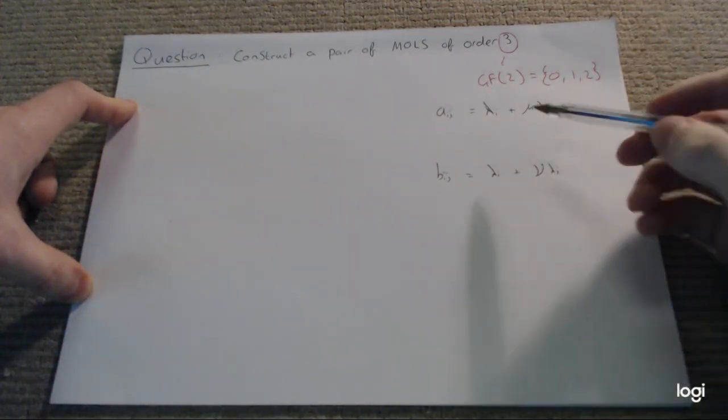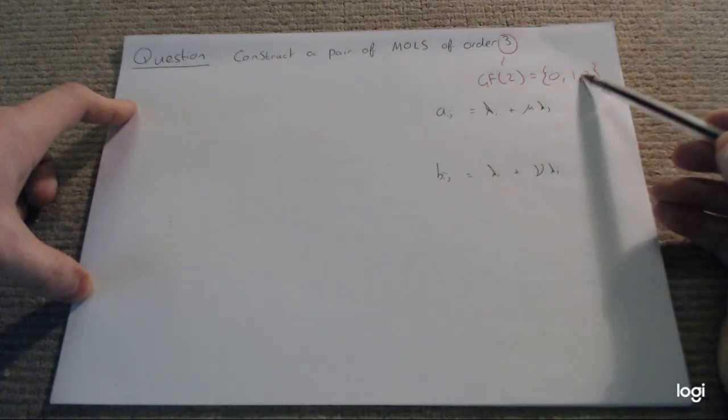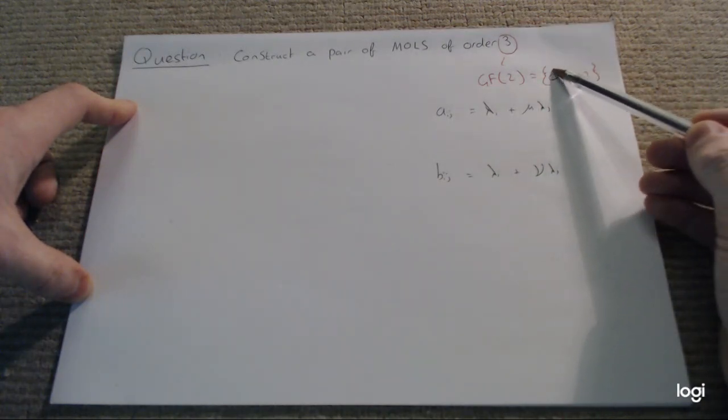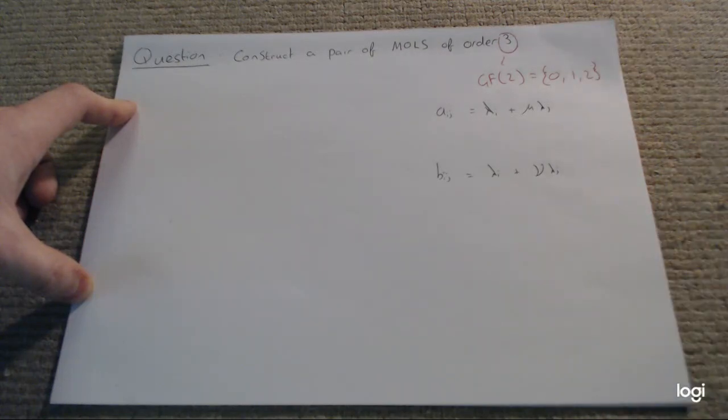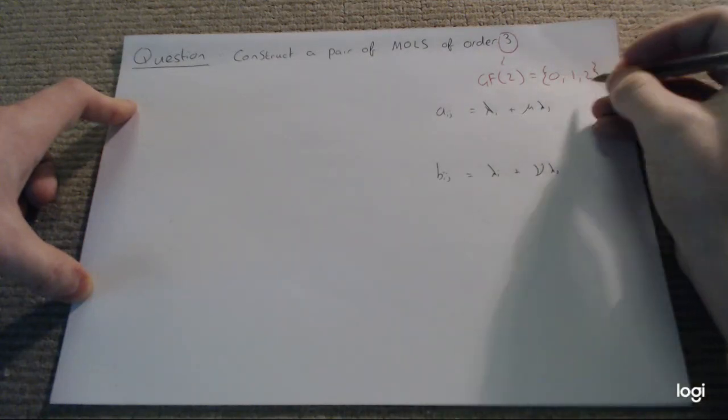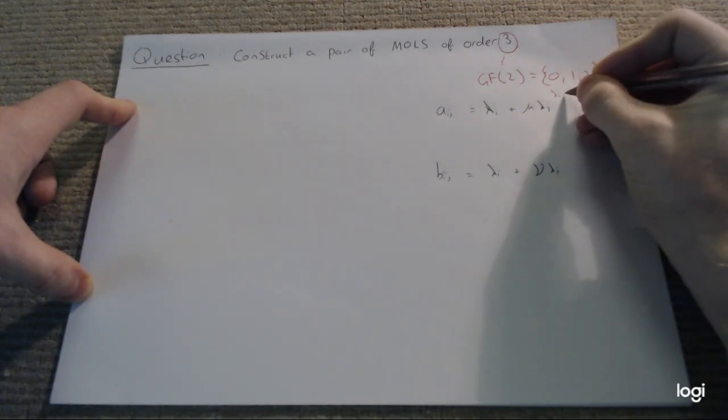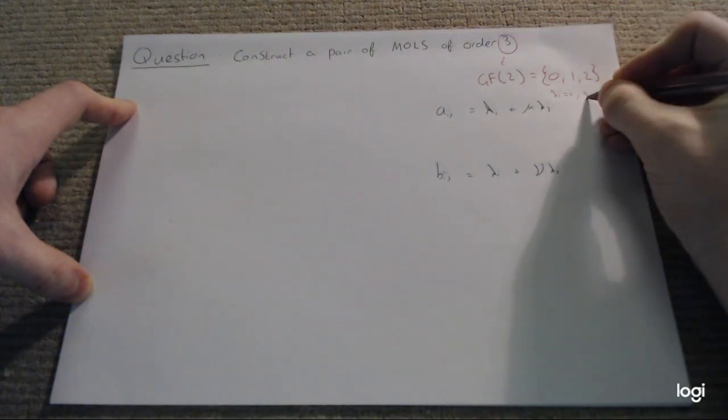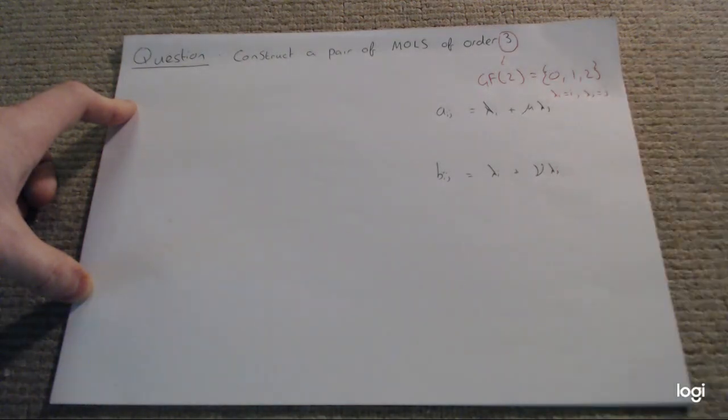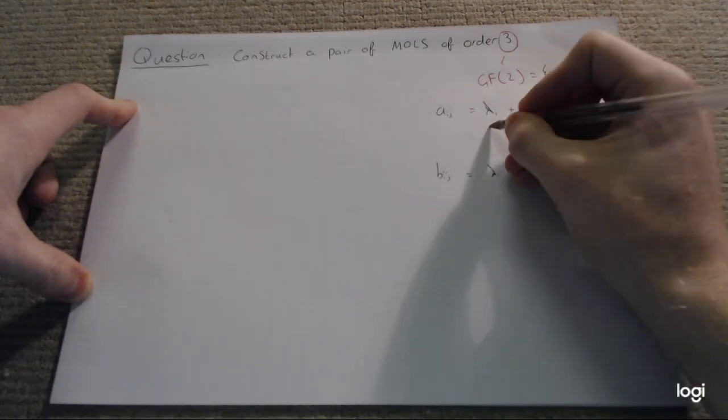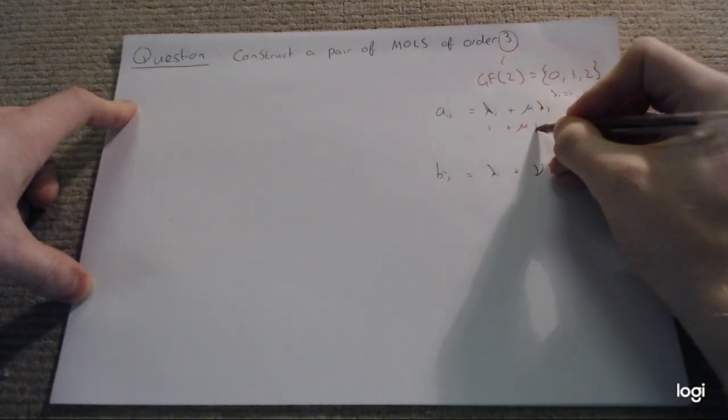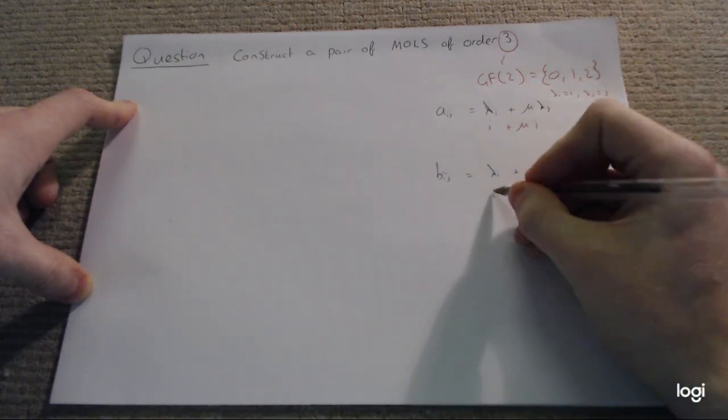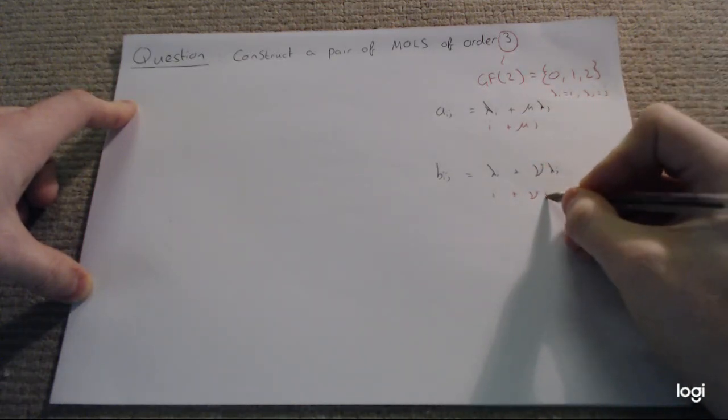If we have a look at these three, we have this being lambda 0, this being lambda 1, and this being lambda 2. If we call it in that fashion, we can say that lambda i is i and lambda j is j. Using this, I can simplify my two equations down to i plus mu j and i plus nu j.